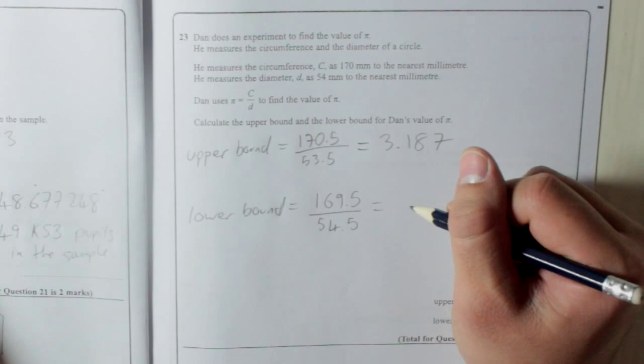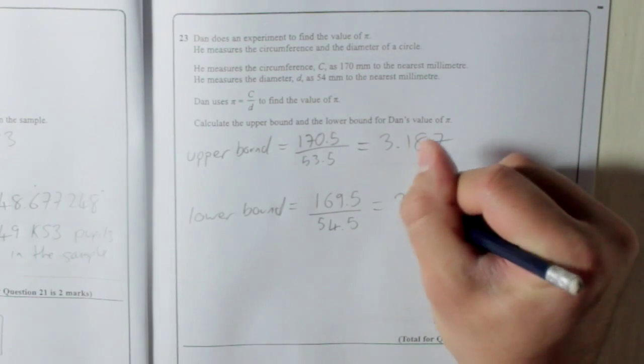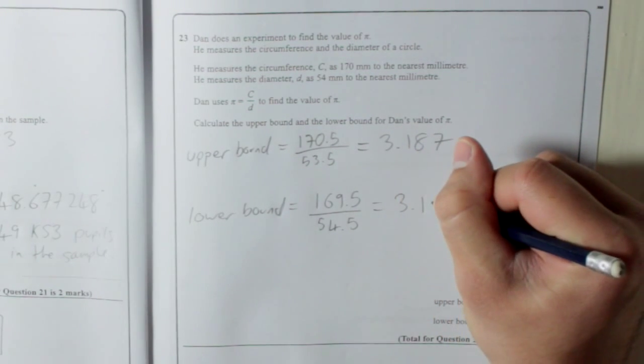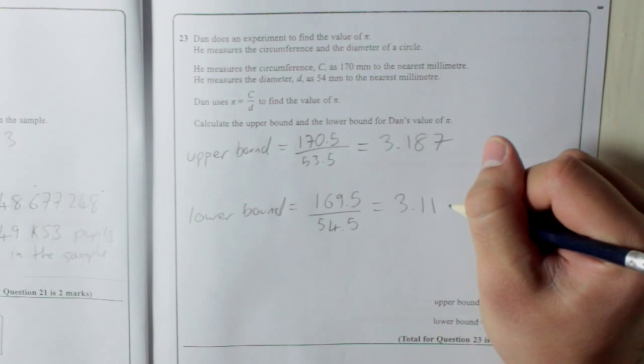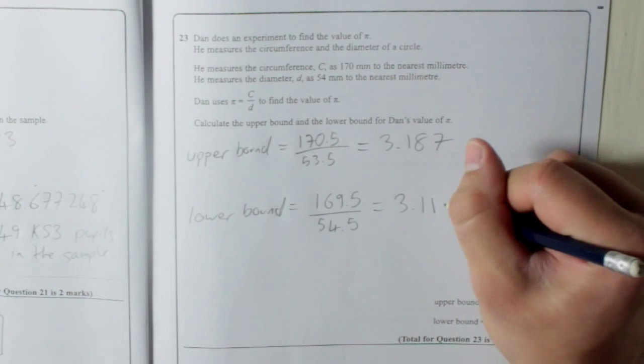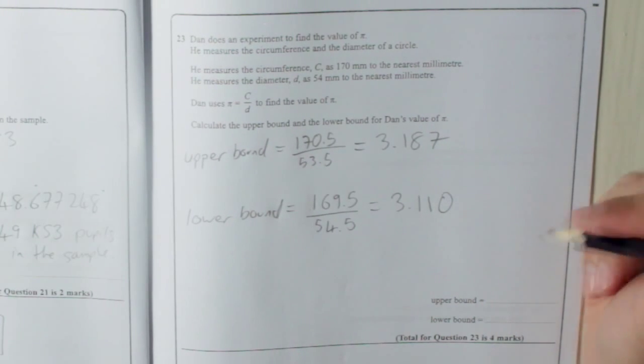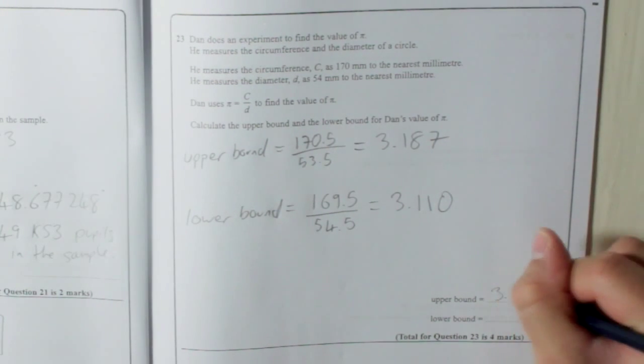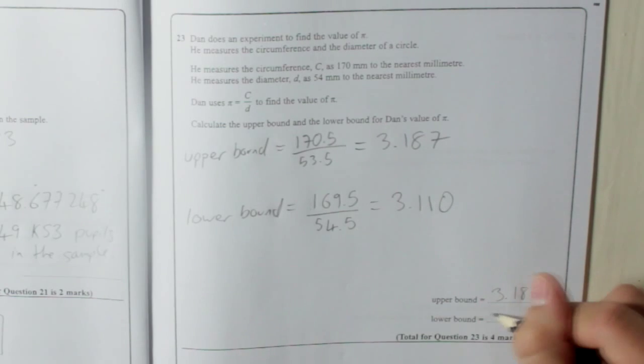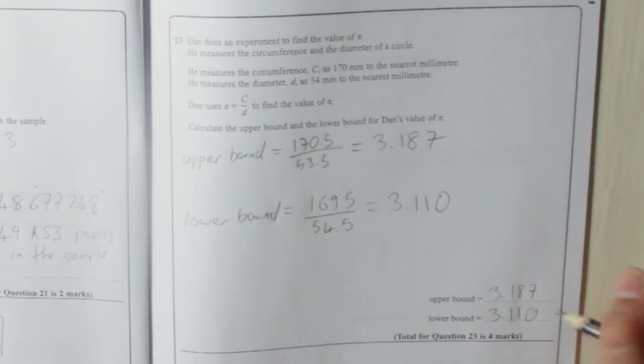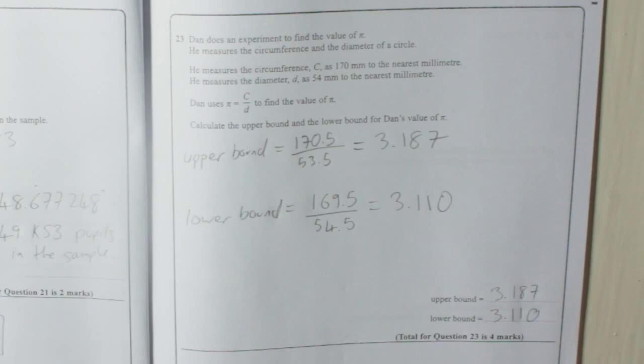Which is 3.110, and might as well keep that in, because it's the same number of decimal places. So here we go, the upper bound, 3.187, lower bound, 3.110. Thank you.